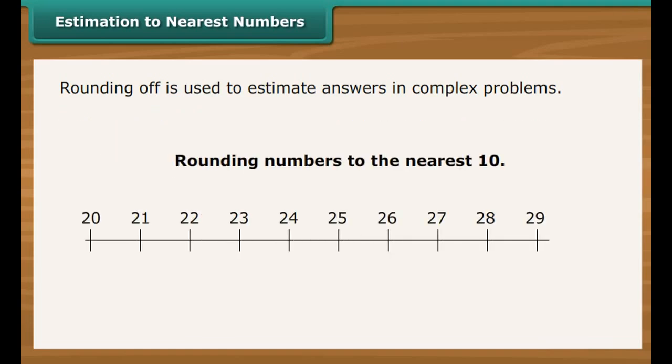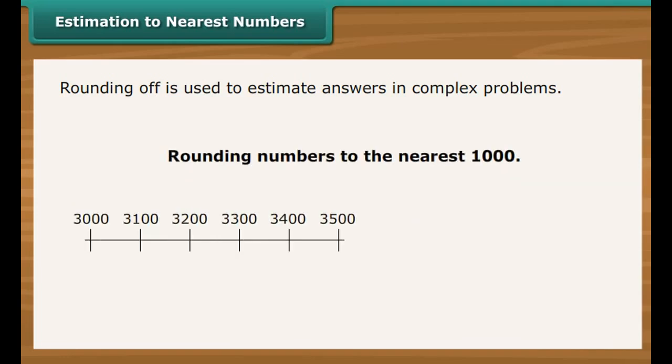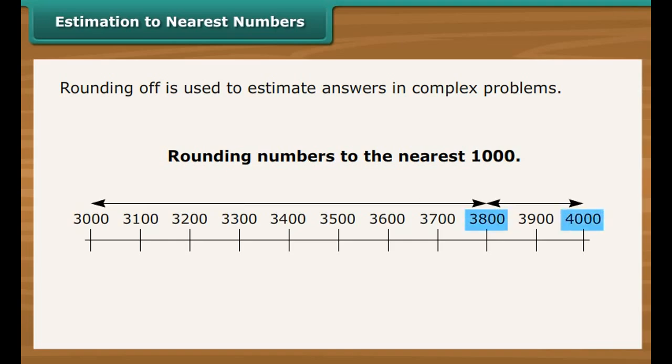Rounding numbers to the nearest ten means finding which ten they are nearest to. For example, 23 rounded to the nearest ten is 20. Rounding numbers to the nearest hundred means finding which hundred they are nearest to. For example, 423 rounded to the nearest hundred is 400. Rounding numbers to the nearest thousand means finding which thousand they are nearest to. For example, 3,800 rounded to the nearest thousand is 4000.